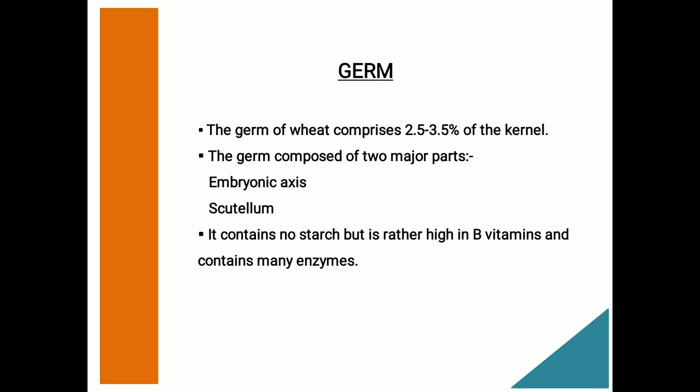The last part of a wheat kernel is the germ, which comprises 2.5 to 3.5% of the kernel. The germ is composed of two major parts: the embryonic axis and the scutellum, which functions as a storage organ. When the seed germinates, the scutellum mobilizes the stored food reserves in the endosperm to the embryo. The germ is relatively high in protein, sugar, oil, and ash. It contains no starch but is rather high in B vitamins and also contains many enzymes.